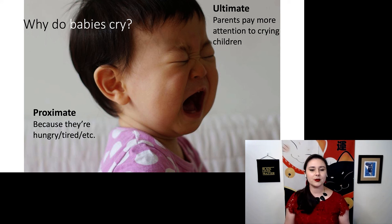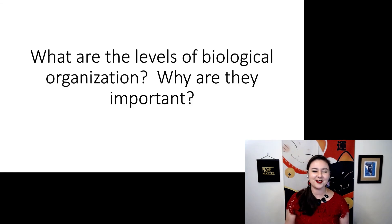And this is important because we don't want to confuse these proximate reasons when we are considering the evolutionary reason for why something evolved, especially a behavior in the first place. So what are the levels of biological organization and why are they important?